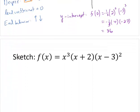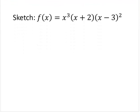Let's see another example. Sketch f of x equals x cubed times x plus 2 times x minus 3 squared. So again, let's identify the zeros and their multiplicity.